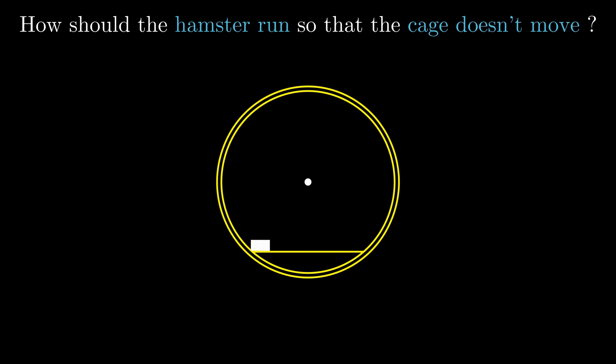To start the problem, let's imagine what happens if the hamster doesn't move. Since the hamster is pushing downwards, everything is going to rotate and basically fall.